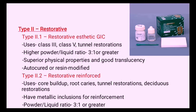Type 2.2, restorative reinforced glass ionomer cement, is used for core build-up, root caries, tunnel restorations, and deciduous restorations. It has metallic inclusions for reinforcement, and the powder-liquid ratio is 3:1 or greater.